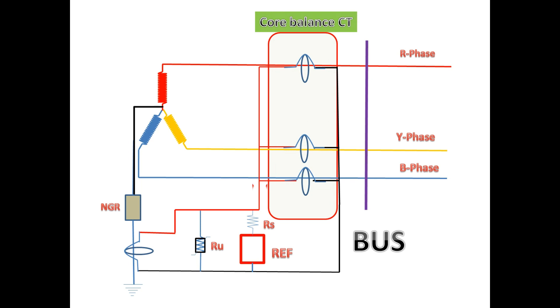This is the core balance CT. Let's consider the current flowing to the REF circuit. Due to this core balance, we can consider IB. The CT ratio we can take as 1000:1 amps. This is the neutral CT. The current flow to the REF circuit can be considered as I0. This is high impedance protection, so the CT ratio should be the same as the core balance CT.